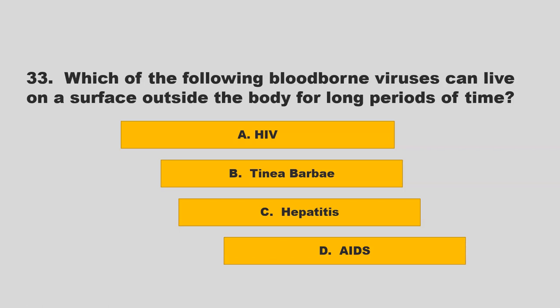Which of the following bloodborne viruses can live on a surface outside the body for long periods of time? Options: HIV, Tinea Barbae, hepatitis, or AIDS. The correct answer is C: hepatitis.